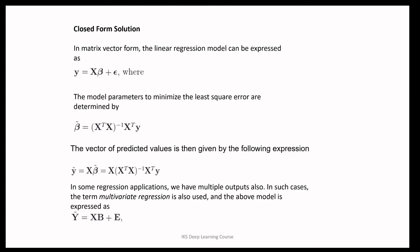In some regression applications, we have multiple outputs — two, three, or four scalar values as output. In that case, the output is also a vector of multiple values, and the term multivariate regression is used. In that case, the model takes a different form as shown at the bottom of the slide.